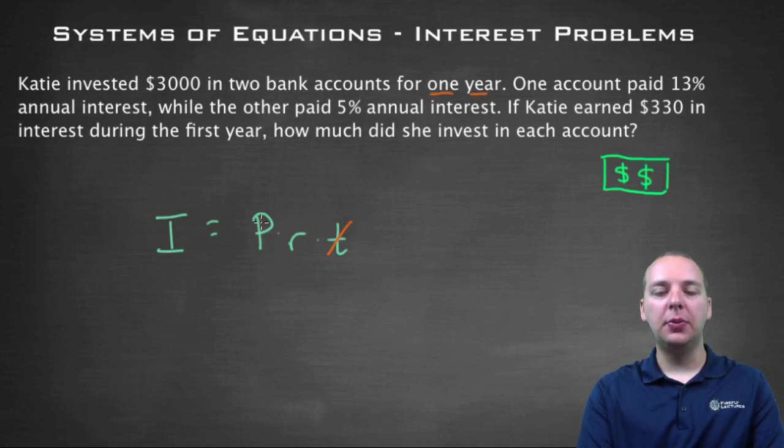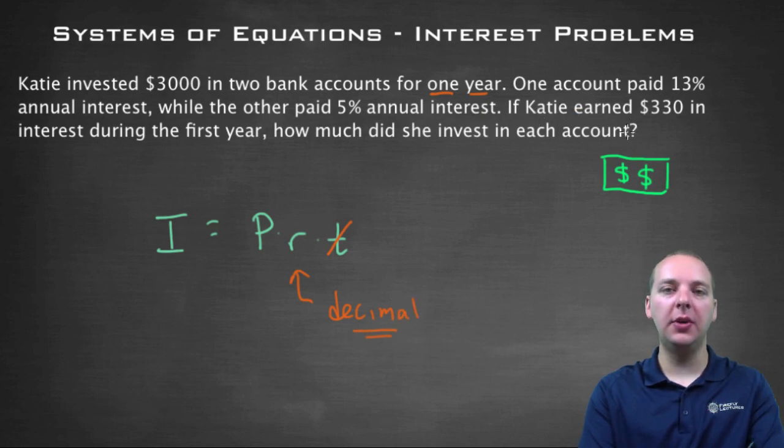The principal is how much we're investing, and the interest rate, the R value needs to be a decimal. So instead of 13%, we would need to say 0.13 in our math.